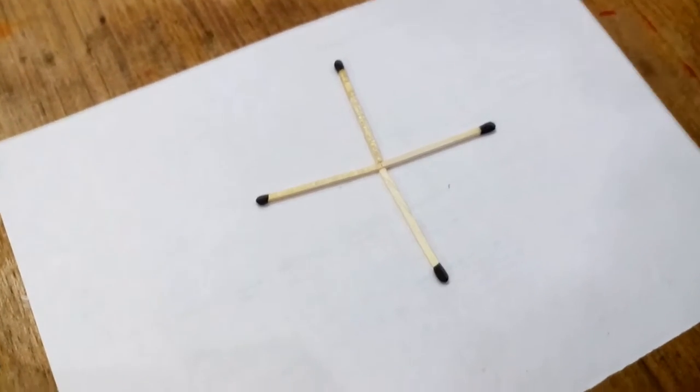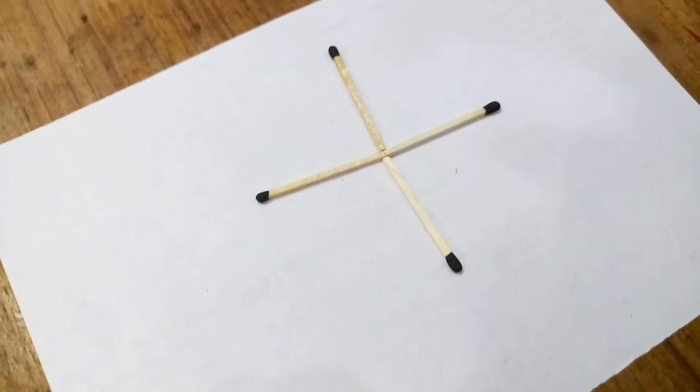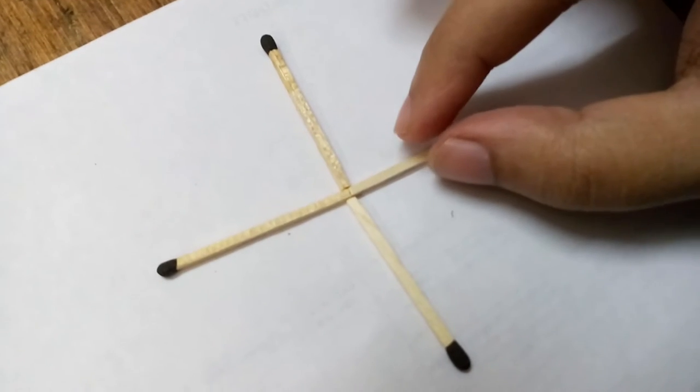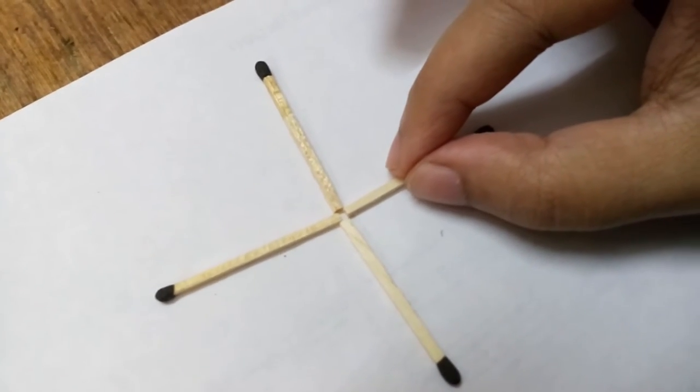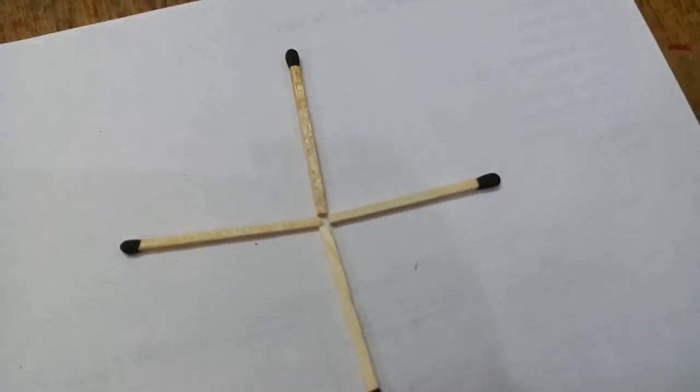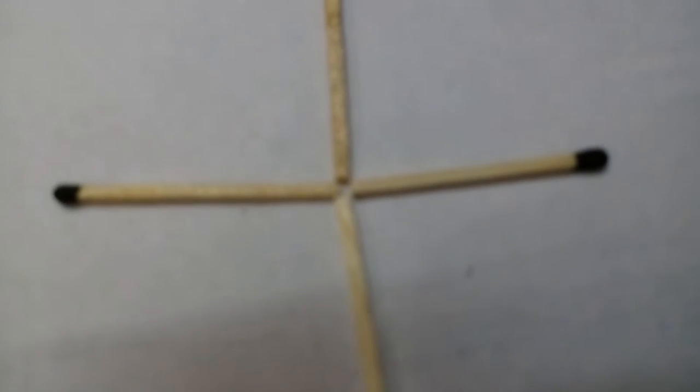They have to just move one match and make a square. Don't scratch your head again. What you have to do is just this - a square between the center. You got it! They lose. Awesome!